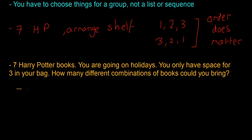In this case, the order doesn't matter because if you bring book one, two, or three, it's the same as bringing book three, two, and one, because they're still the first three books in your bag. So the way we do combinations is using a different button on the calculator.